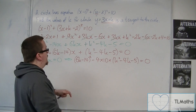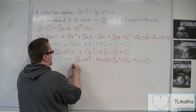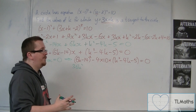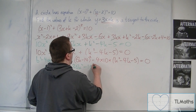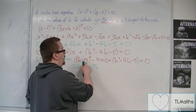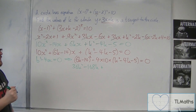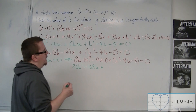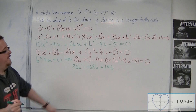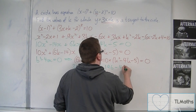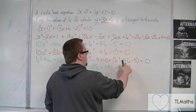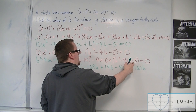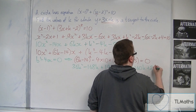Expanding (6k minus 14) squared: 6k squared gives 36k squared, and 6 times 14 twice gives minus 168k, plus 14 squared gives 196. Then subtracting 4 times 10 times (k squared minus 4k minus 5): minus 40k squared, plus 160k, plus 200. All equal to 0.